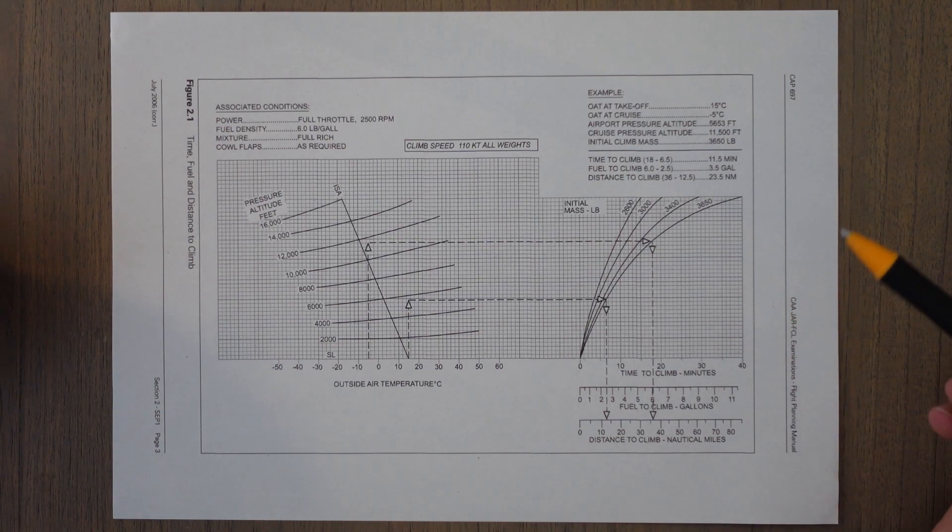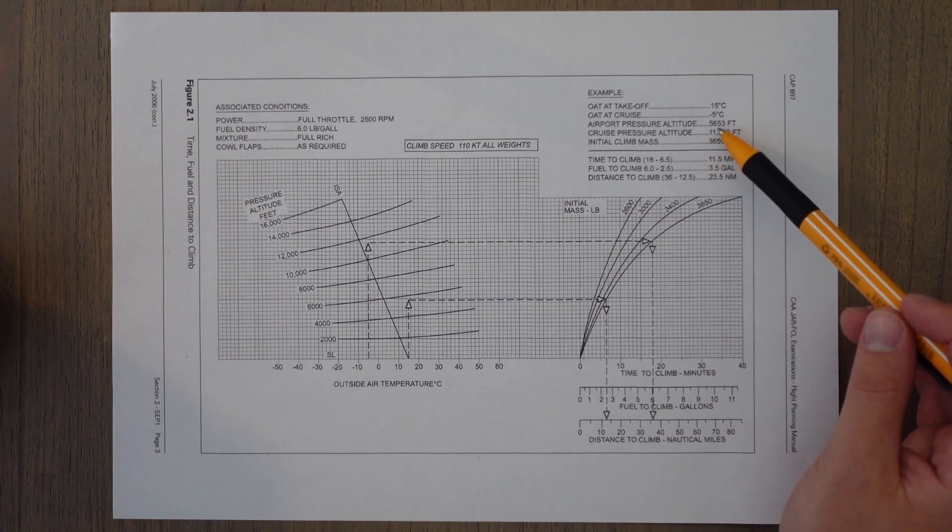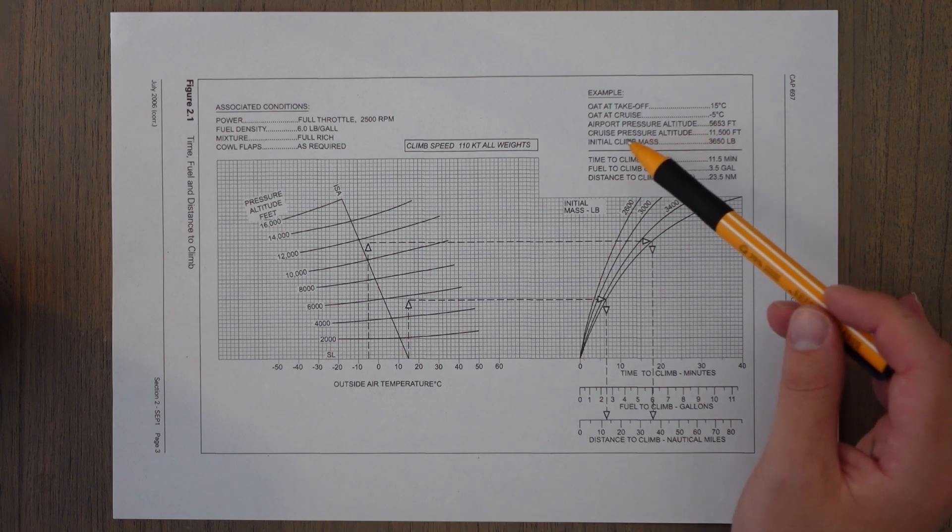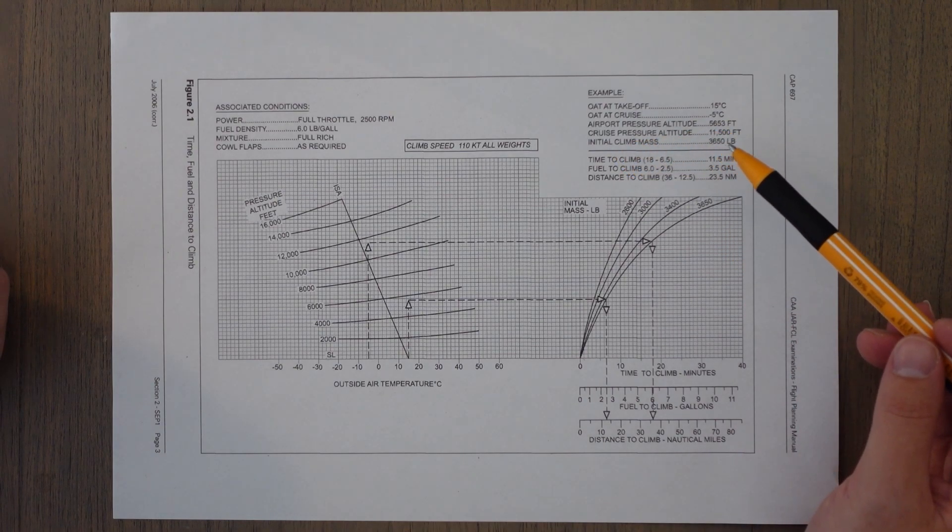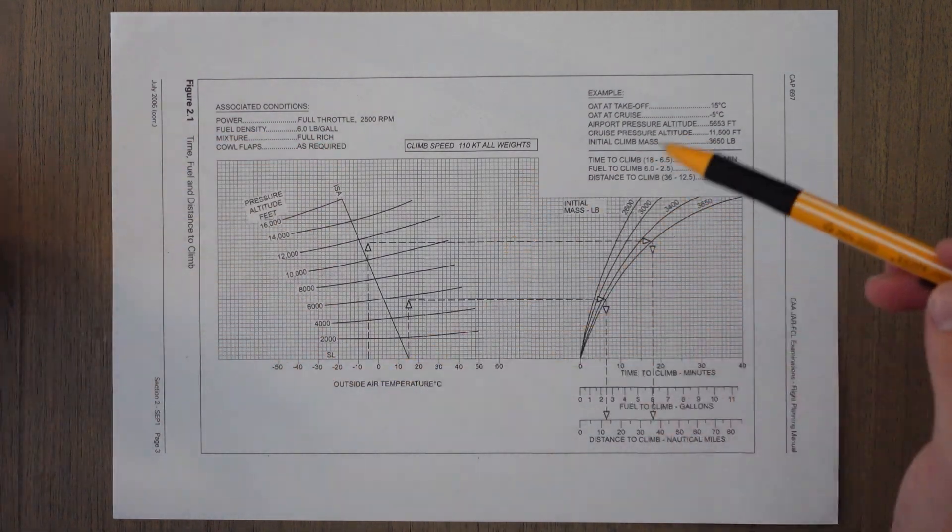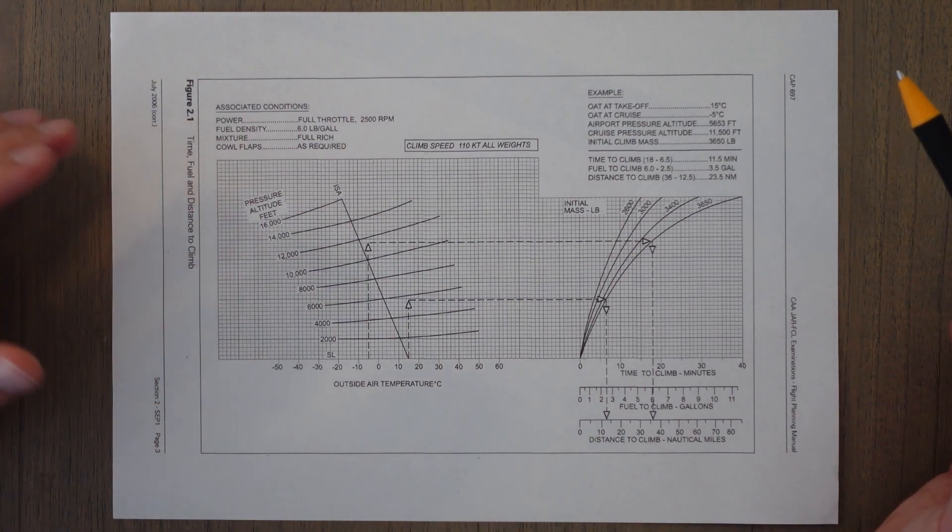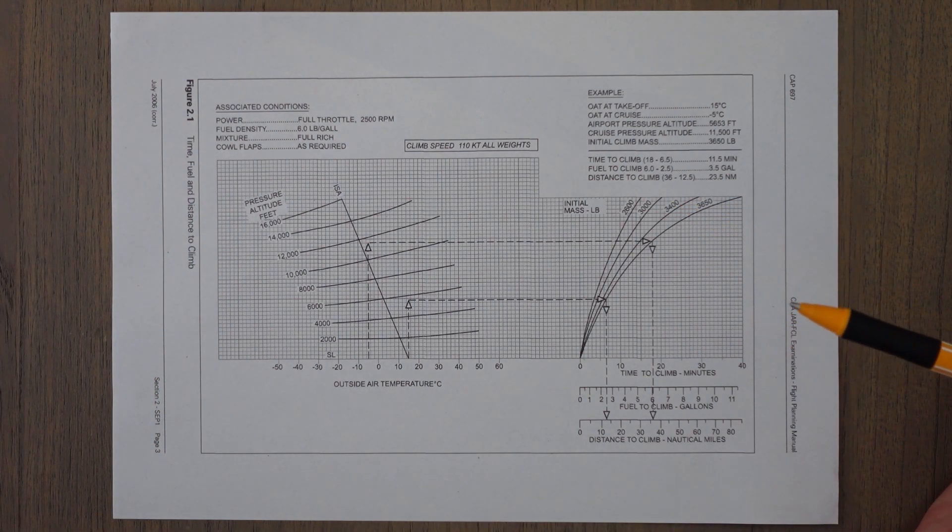So it looks like in the example they are climbing from a pressure altitude of 5,000 feet to a cruise pressure altitude of 11,500, so they're doing two and then taking the difference to find out the total fuel and climb between the two. We don't need to do that luckily—in our question we're climbing from mean sea level.